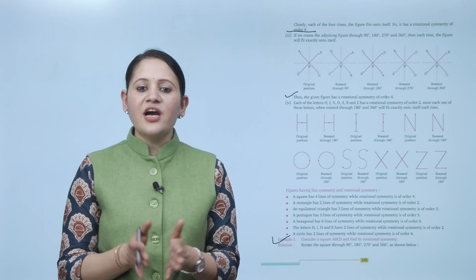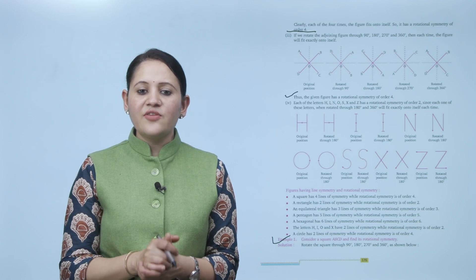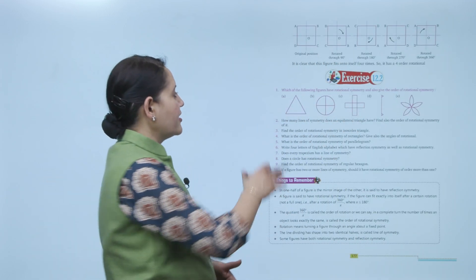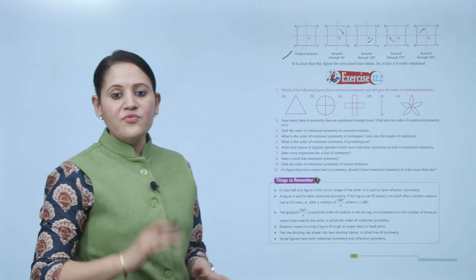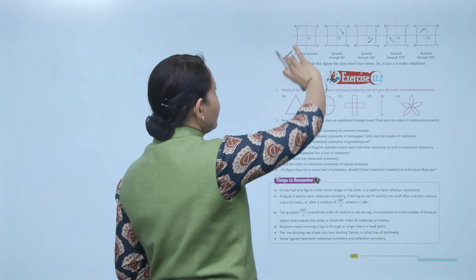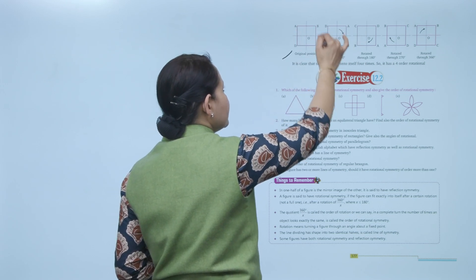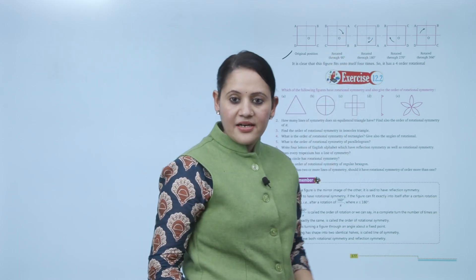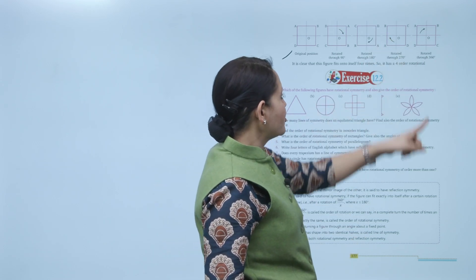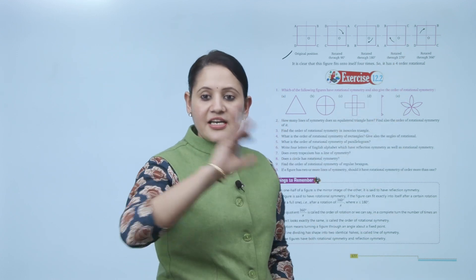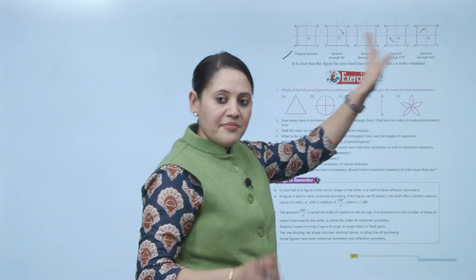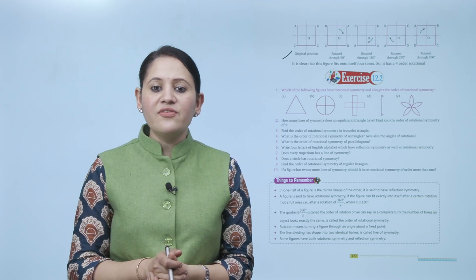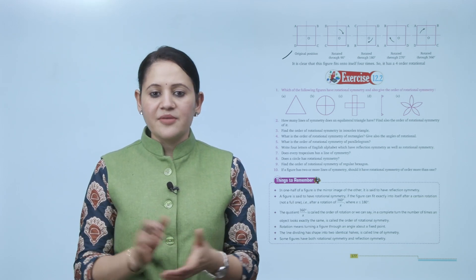Example: Consider square ABCD and find its rotational symmetry. Rotate the square through 90 degrees, 180 degrees, 270 degrees, and 360 degrees. In the original position, rotating 90 degrees moves each vertex to a new position. At 180 degrees and 270 degrees the square again looks the same. At 360 degrees it returns to original position with A, B, C, D back in place. It is clear that this figure fits onto itself 4 times, so it has rotational symmetry of order 4.